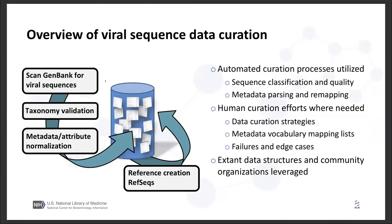This is the overview of our viral sequence data curation flow. We are scanning GenBank for viral sequences and processing them. Our data flow stresses a couple of key concepts. One is to use automated curation processes when possible — we have automated processes that classify sequences, assess their quality, and parse metadata fields to look for inconsistent vocabulary usage and remap to controlled vocabularies. We try to apply human data curation efforts where needed most — in development of the data curation strategies themselves, maintaining metadata vocabulary mapping lists, and examining failures and edge cases to improve those processes.